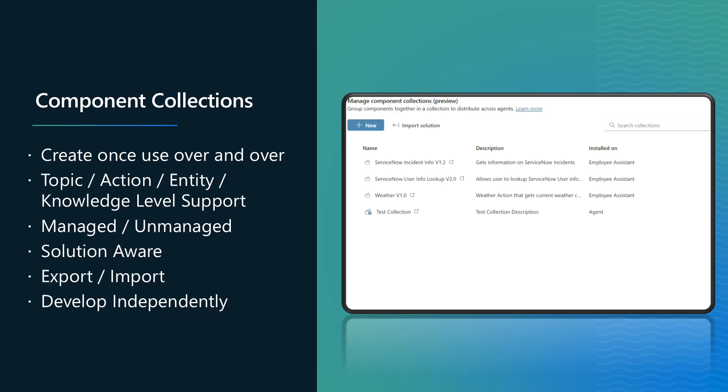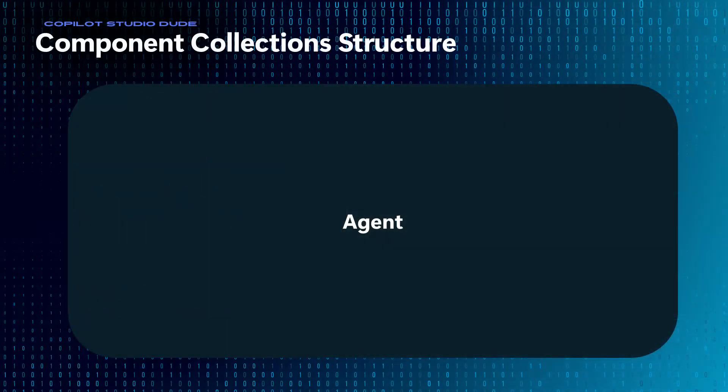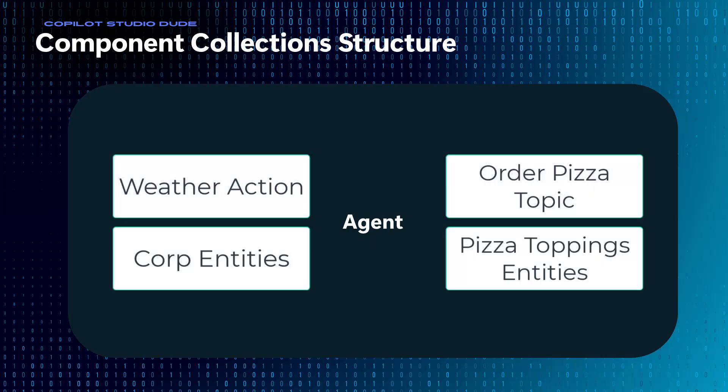And this is really a major step forward in Copilot Studio. So let's take a look at what this all means. Imagine that I've got an agent that I'm building, and inside of this agent I have a bunch of different topics and entities. And then let's say that across all of these different things inside of this agent, I decide that I want to take the ability to order pizza and package it up into a reusable component.